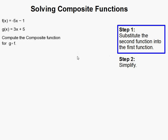Step one is to substitute the second function into the first function. Usually you're given a problem something like this. Compute the composite function for g of f.